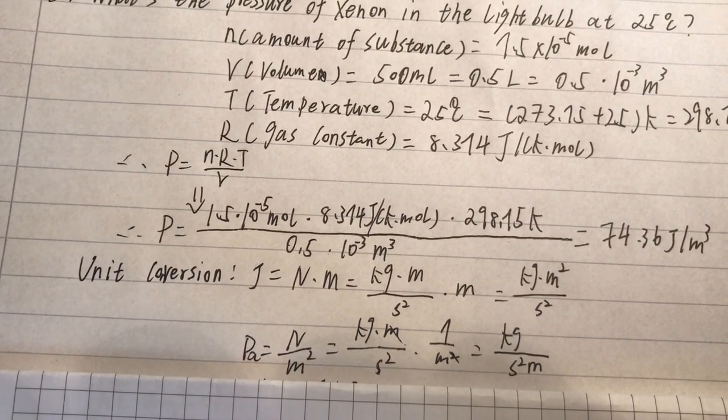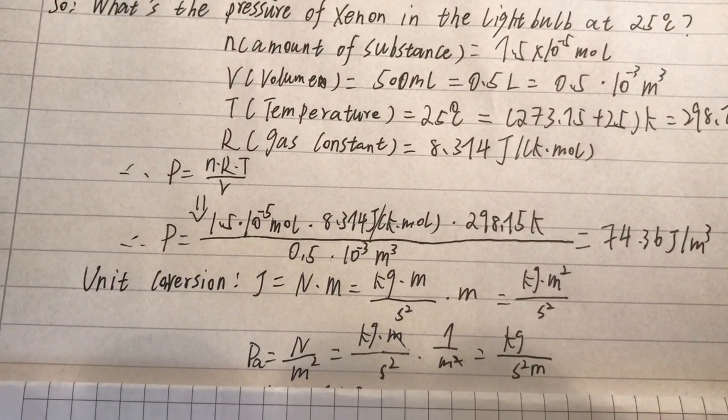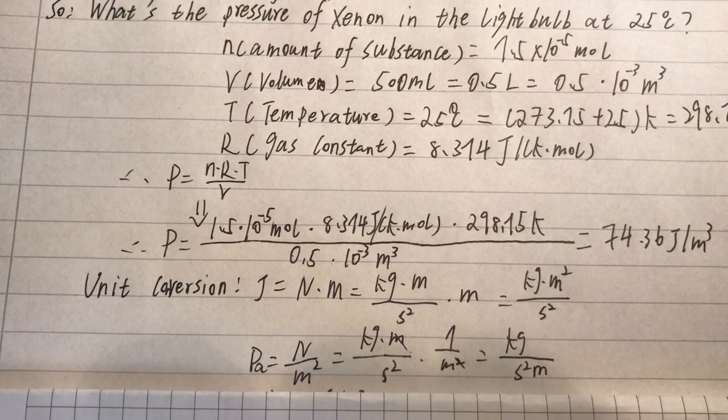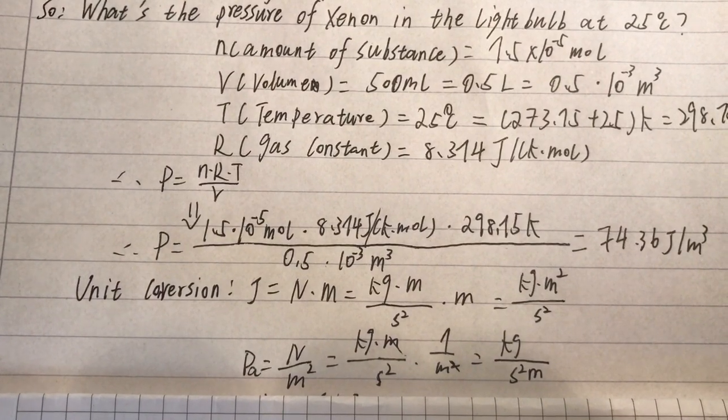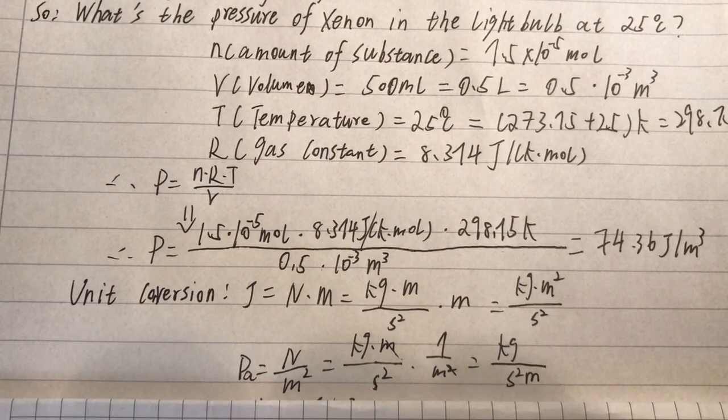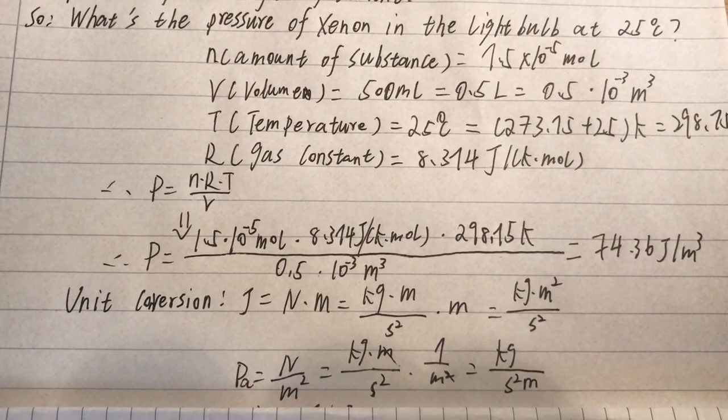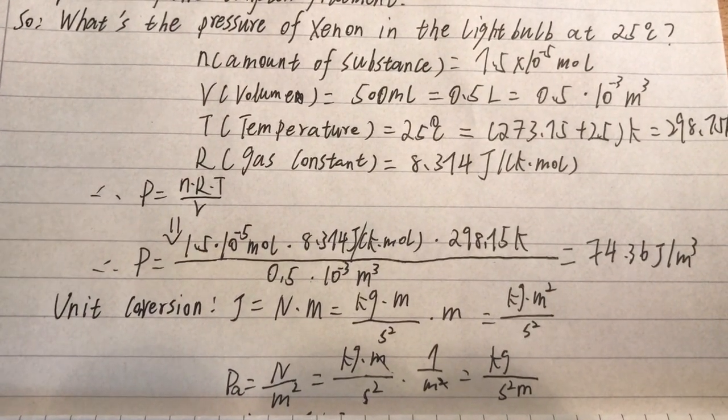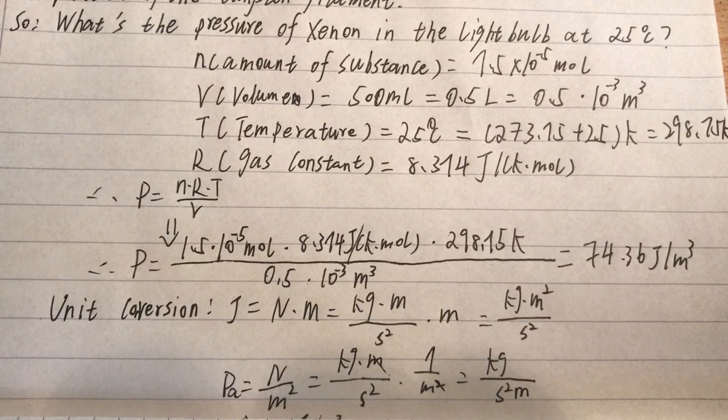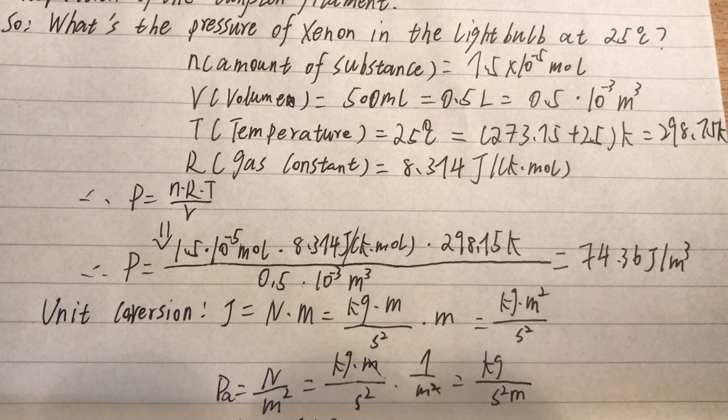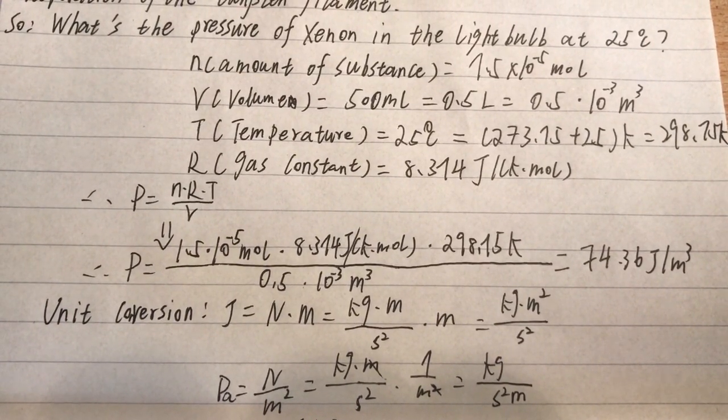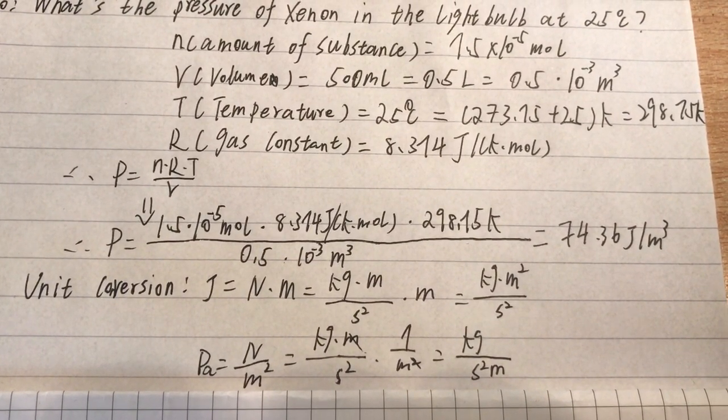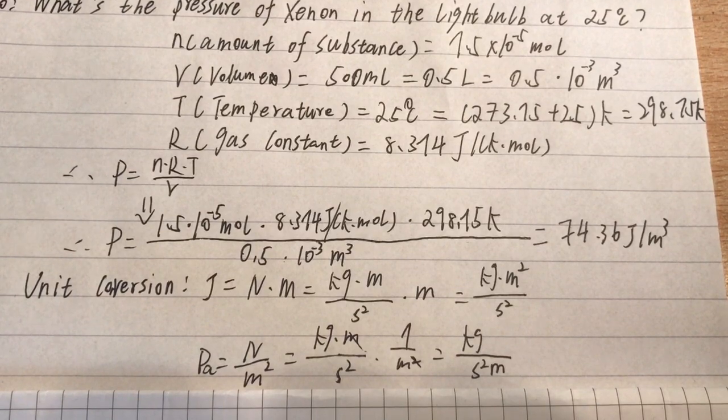But the pressure has to be in Pascal. So, here is the unit conversion. 1 Joule is equal to 1 Newton multiplied by 1 meter, and is equal to 1 kilogram multiplied by the square of meter over the square of second. And Pascal is equal to 1 Newton over the square of meter, which is also kilogram over the square of second multiplied by 1 meter.